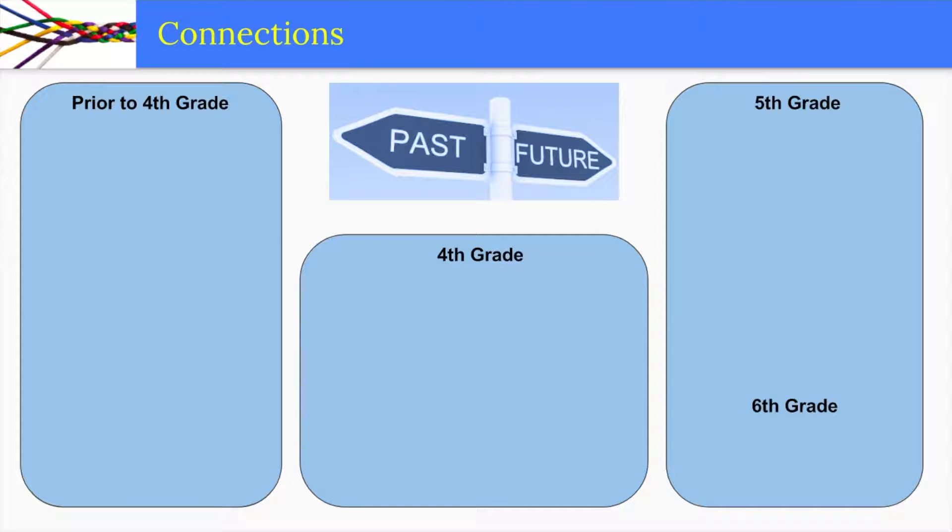It is important that students make connections between math they have already learned and math they are going to learn. Prior to fourth grade, students learned skip counting by numbers such as fives, tens, and hundreds. They learned how to represent multiplication as an array and how to think of division as a problem with missing factors.